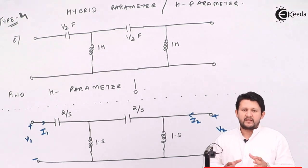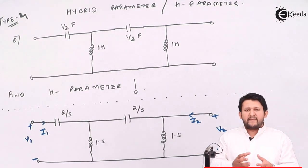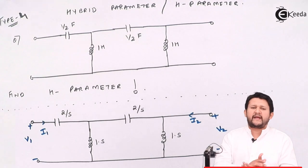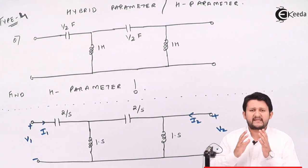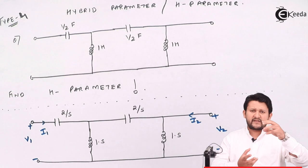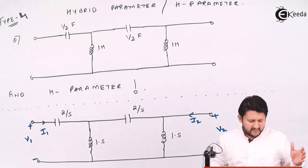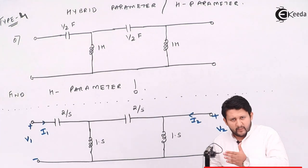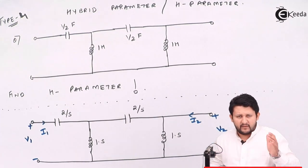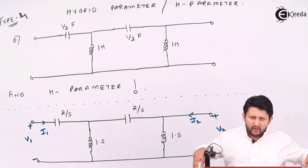The fourth type, based on the third type, is hybrid parameters. For hybrid you again apply KCL, but after getting the Y parameter equations you have to do some modification to obtain hybrid parameters. The name itself says hybrid, meaning the equation will be a mixed combination of the four variables: V1, V2, I1, I2.